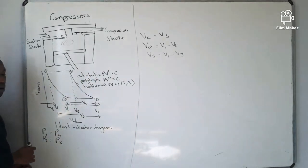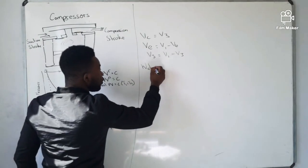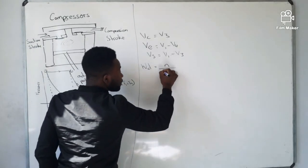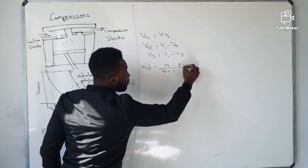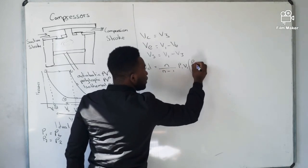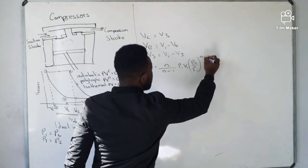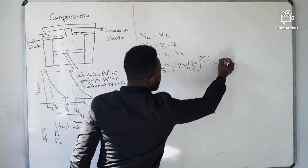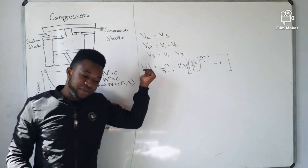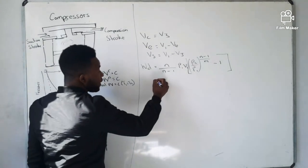These are the volumes found on this diagram: clearance volume, effective volume, and swept volume. We also have the formula to calculate the indicated power, or work done. There are two formulas. The first is: N over N-1, multiplied by P1 times V1, open bracket, then (P2 over P1) to the power of (N-1 over N), minus 1, close bracket.